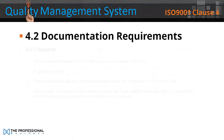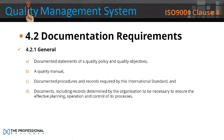4.2 Documentation Requirements — 4.2.1 General. The QMS documentation shall include: a) Documented statements of quality policy and quality objectives; b) A quality manual; c) Documented procedures and records required by this international standard; and d) Documents including records determined by the organisation to be necessary to ensure the effective planning, operation and control of its processes.